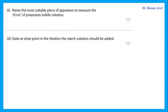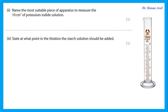To measure 10 cm³ of potassium iodide solution: since the question states 10 cm³ (not 10.0 cm³), high accuracy is not required, so a measuring cylinder is the most suitable piece of apparatus.